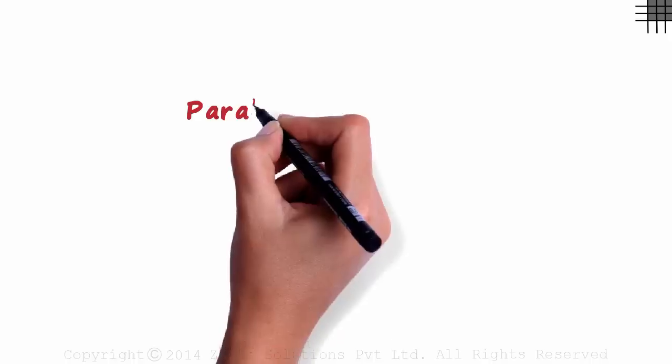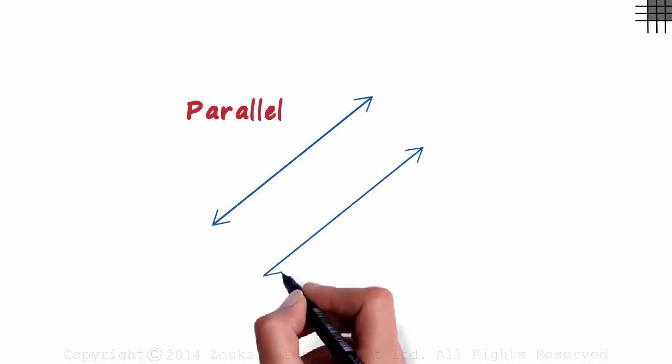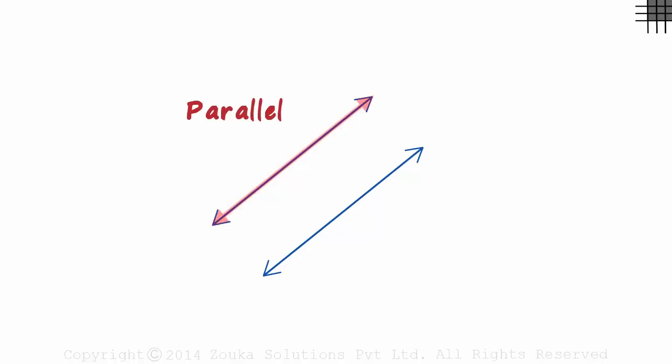How are the slopes of two parallel lines related? Take these two parallel lines for example. If the slope of this line is M1 and that of this one is M2, then how are M1 and M2 related? You don't really have to think here. It's obvious. The tilt or the inclination is the same. M1 will be equal to M2. The slopes of parallel lines are the same.